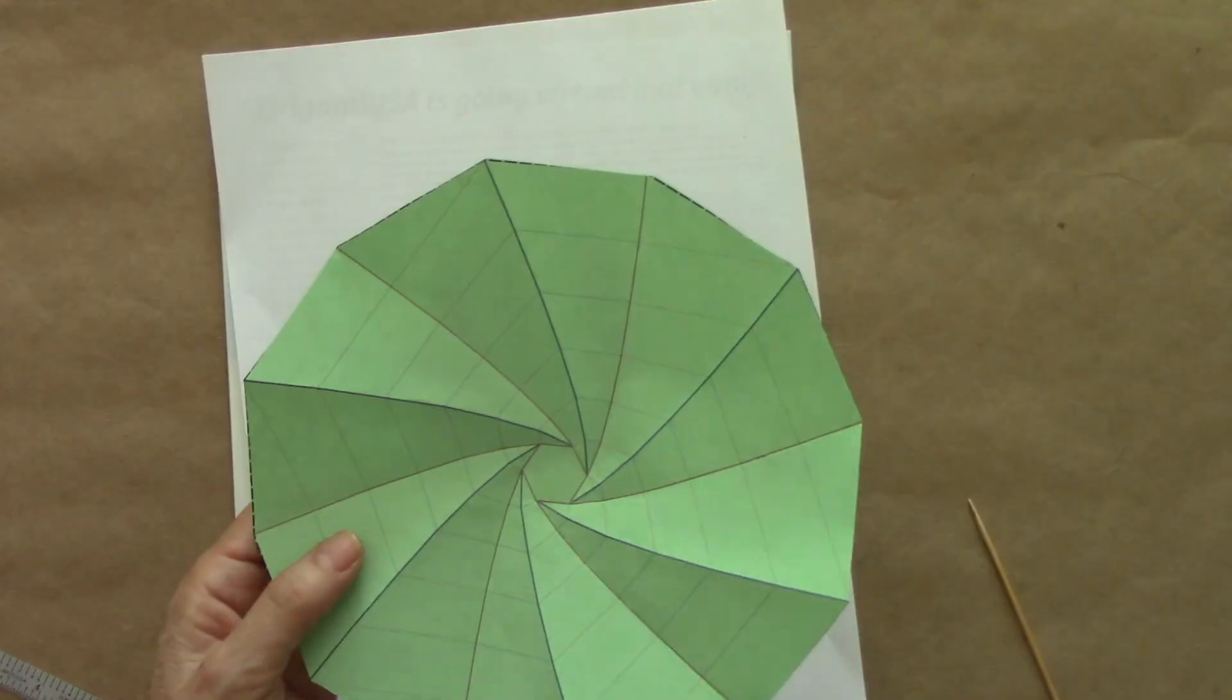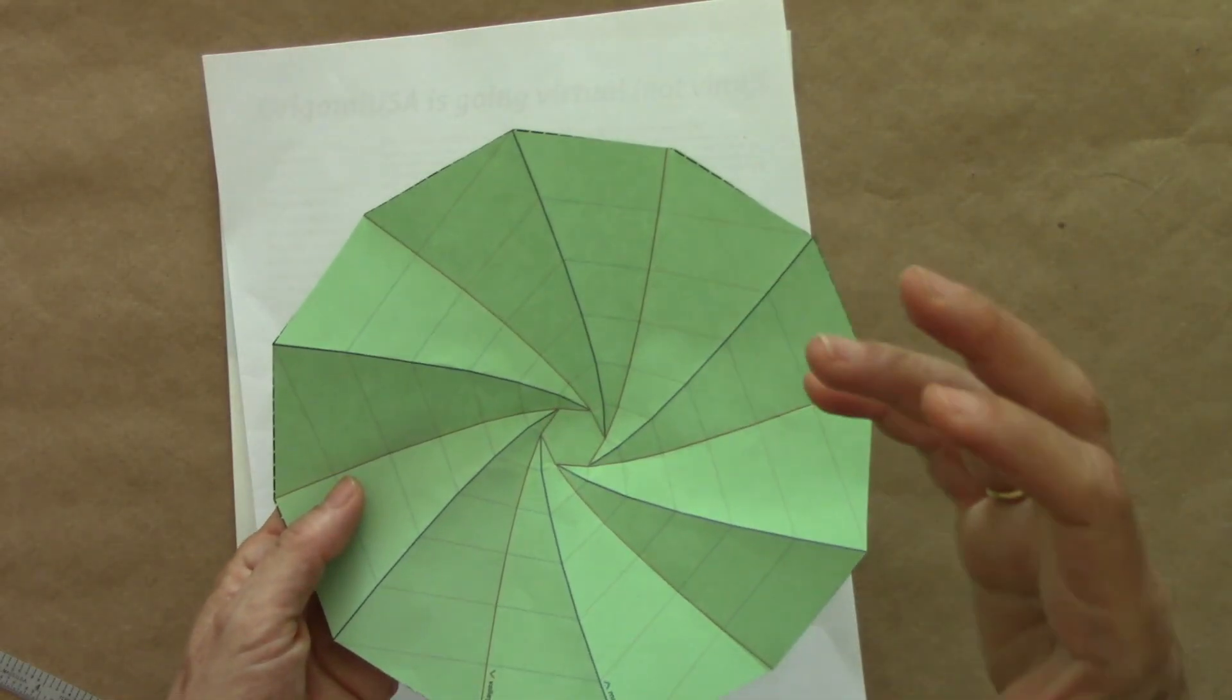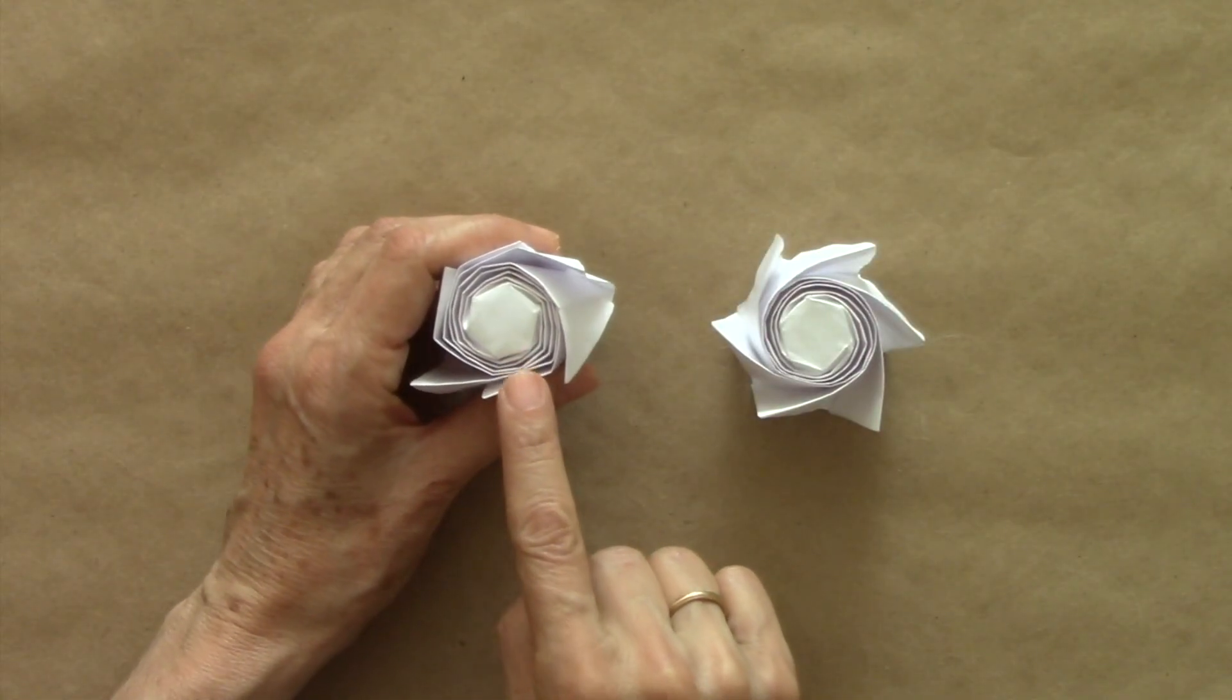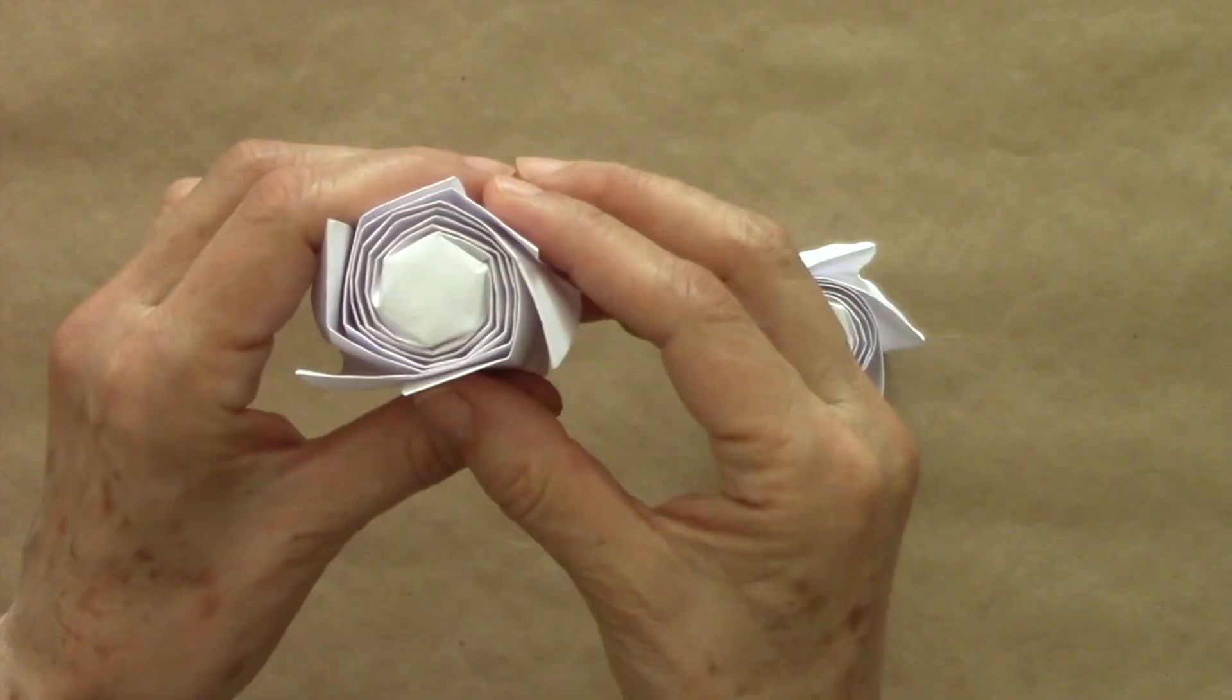But we can score them so that the finished piece has more of a hexagonal look about it. On this paper, I scored those radial or spiral creases.